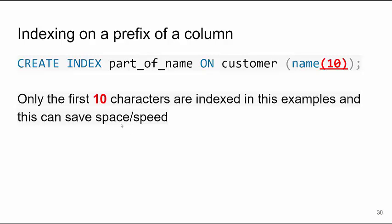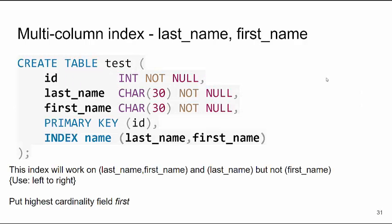Indexing on prefixes of a column is possible. If you've looked at your data and 95% of your customers have unique first 10 characters of their name, you don't have to index the entire name. The smaller your indexes, the faster they're going to be searched. You can have multi-column indexes — in this example, on a table with last name and first name, our primary key is ID but we can also index last name and first name. Make the first column you index the most unique — the highest cardinality. This index works for searching on last name, last name plus first name together, but not for first name alone.